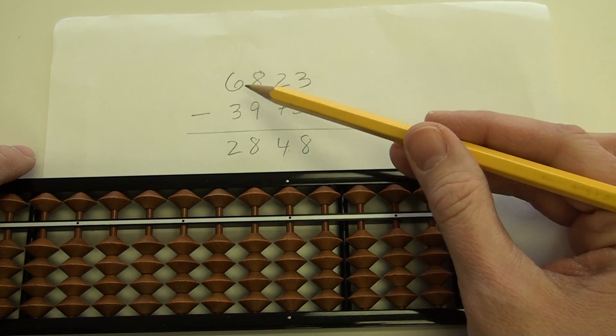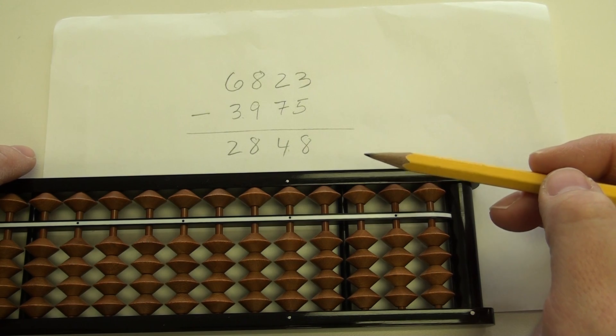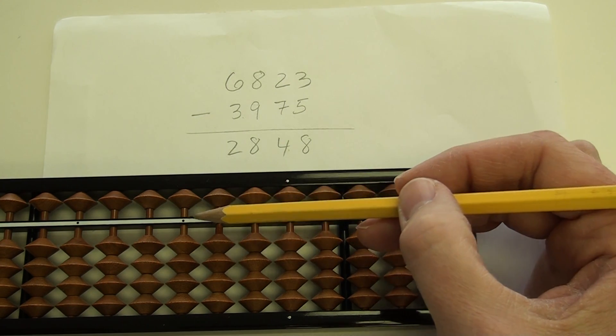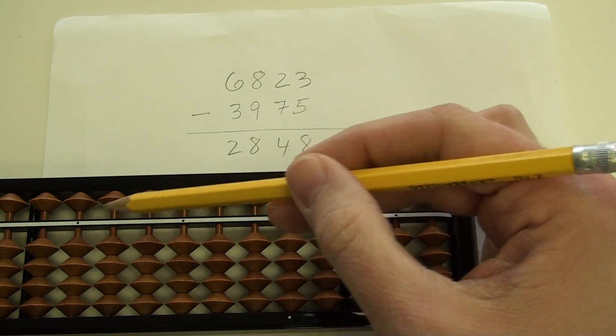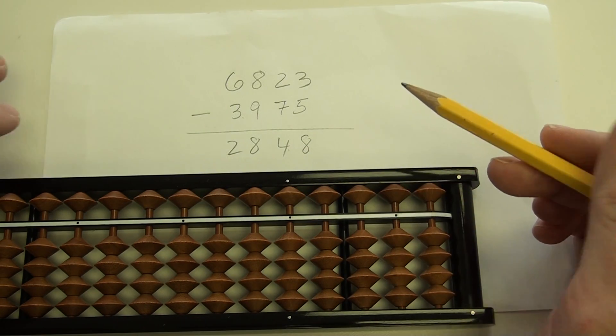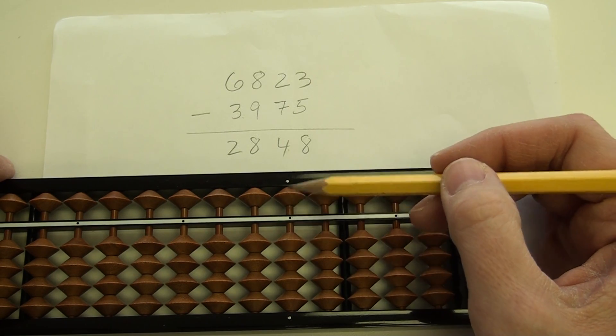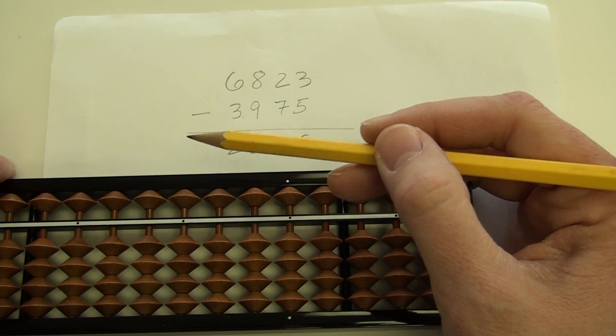First thing we want to do is we want to put the 6,823 on the abacus. And recall that I can use any of these dots for indicating my ones digit. I'm going to use this one here for my ones rod. So this is ones, tens, hundreds, thousands.